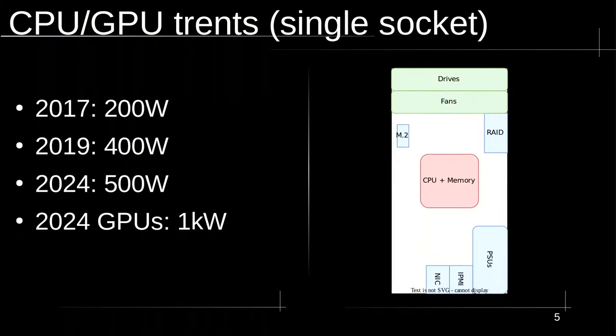The power usage of CPUs over the past few years has been going up and up. In 2017, the servers we bought were 200 watts; 2019, 400 watts; and in 2025, the latest generation announced is 500 watts. It still has to fit in the same chassis, so cooling gets a lot more complicated. On the GPU side, the latest NVIDIA GPUs are rated at one kilowatt each — put eight in a server and you're at eight kilowatts. Cooling that is non-trivial, and getting power to that is also non-trivial.